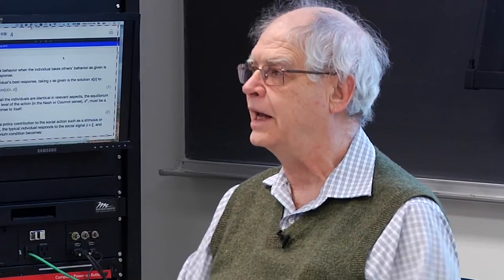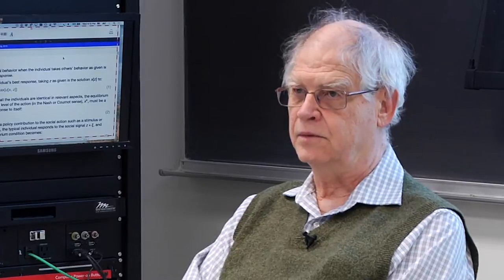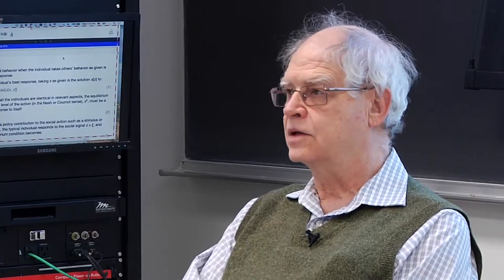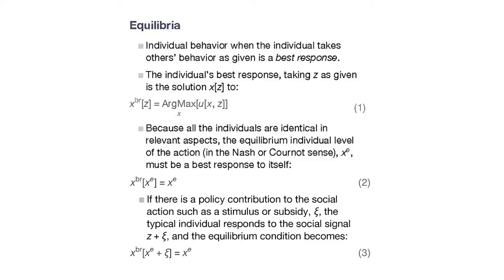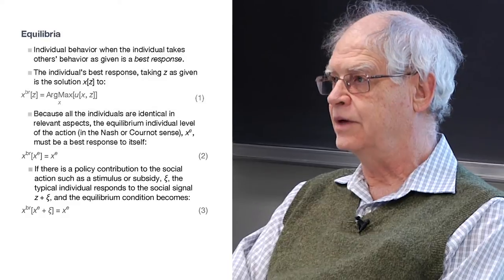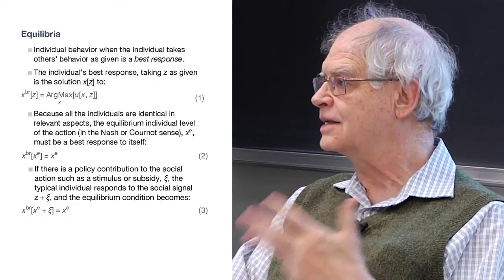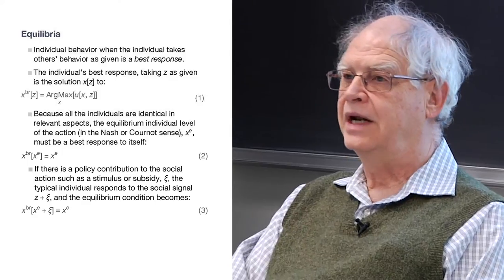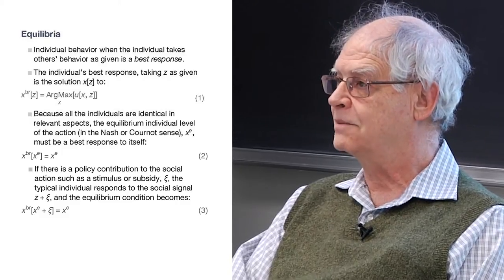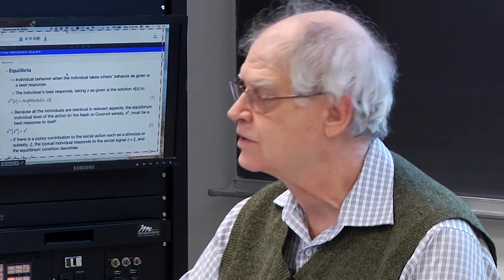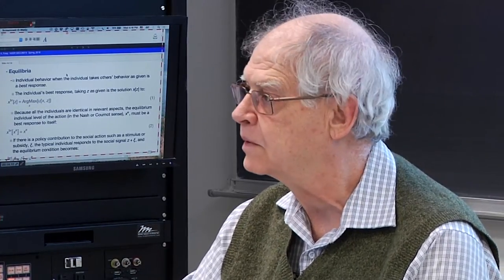So we have this setup — now what can we do with it? There are basically two things: one is to compute or calculate equilibrium. The concept of equilibrium being used here is the Cournot-Nash concept. An equilibrium is a set of levels of the action variable with the property that when everybody else is doing it, it's also best for the typical individual to do it. It's the best response to itself: if everybody else is doing a certain thing, then the best response of the individual is to do that same thing.